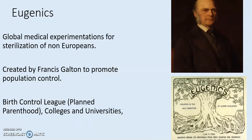The first thing to understand is the role of eugenics. In our last lecture, we talked about social Darwinism and the racial hierarchy that was created. This time we're dealing with eugenics, global medical experimentation, and the sterilization of non-Europeans. If you look at the history of eugenics, this is part of social Darwinism and the ideology of depopulation.